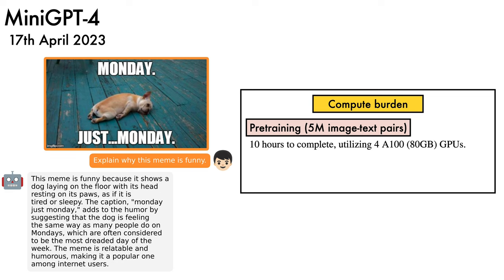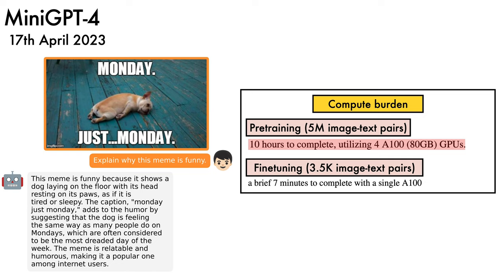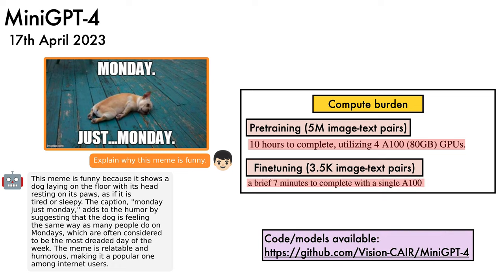What's particularly striking about this work is the low compute burden. Because it only involves training a linear layer to adapt pre-trained models, it's fast. There is a pre-training stage that takes 10 hours on four A100 GPUs. Then, after some clean-up with ChatGPT, there is a fine-tuning stage which takes, as the authors put it, a brief 7 minutes to complete on a single A100. Code and models are available.